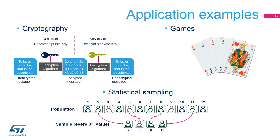The RNG can be used for a wide range of applications, including cryptography, games, and statistical sampling. For example, all the security of cryptography algorithms are connected to the impossibility of guessing the key. So the key has to be a random number, otherwise the attacker can guess it.